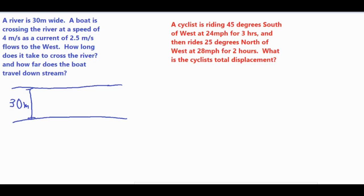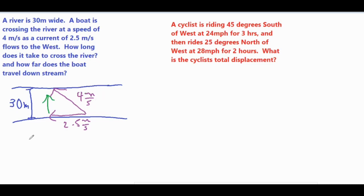We have a current going to the west of 2.5 meters per second, and the actual speed of the boat is 4 meters per second — that's our resultant velocity, our hypotenuse. There is an unknown component taking the boat northward across the river. Getting across is basically moving south to north to cover that 30 meters. We have our hypotenuse, so we'll use the Pythagorean theorem again to solve for this unknown northern component.